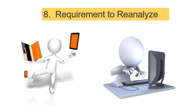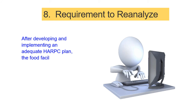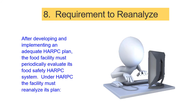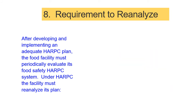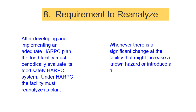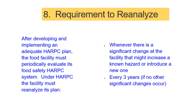Step 8: Requirement to Reanalyze. After developing and implementing an adequate HARPC plan, the food facility must periodically evaluate its food safety system. Under HARPC, the facility must reanalyze its plan whenever there is a significant change that might increase a known hazard or introduce a new one, and every three years if no other significant changes occur. HARPC also requires the facility to perform a new hazard analysis and implement any new necessary preventive controls before operational changes occur. Any changes must be documented in the firm's HARPC records, and if no changes are necessary after a reanalysis, the firm must document the basis for that decision.